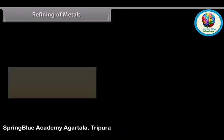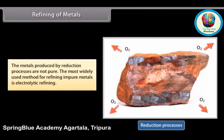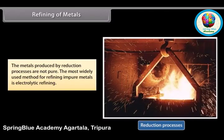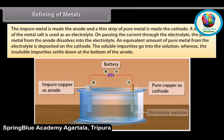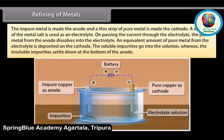Refining of metals. The metals produced by reduction processes are not pure — they still contain impurities which must be removed to obtain pure metals. The most widely used method for refining impure metals is electrolytic refining. The impure metal is made the anode and a thin strip of pure metal is made the cathode. A solution of the metal salt is used as the electrolyte. On passing current through the electrolyte, pure metal from the anode dissolves into the electrolyte and an equivalent amount of pure metal is deposited on the cathode. Soluble impurities go into the solution, while insoluble impurities settle at the bottom of the anode, known as anode mud.